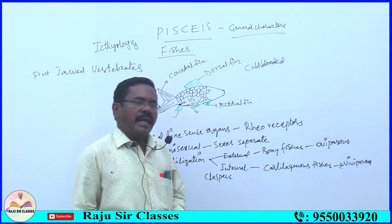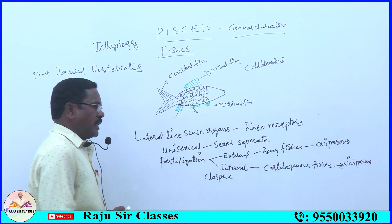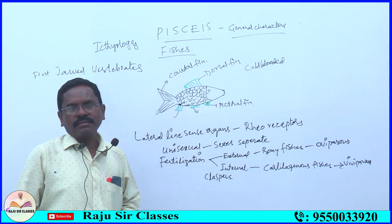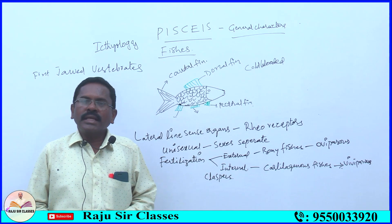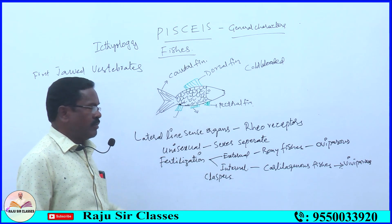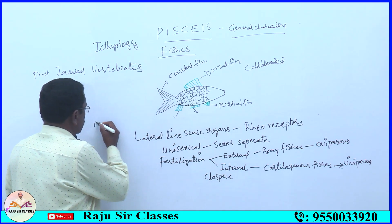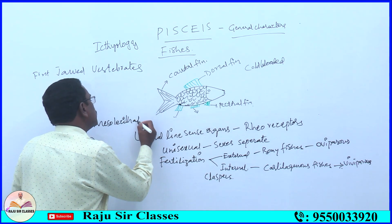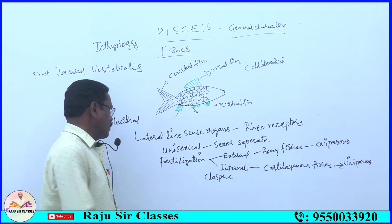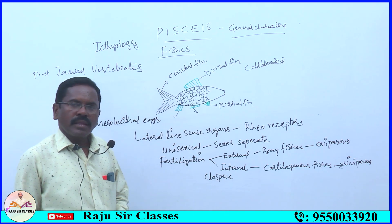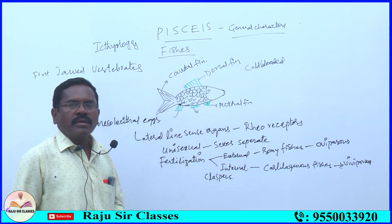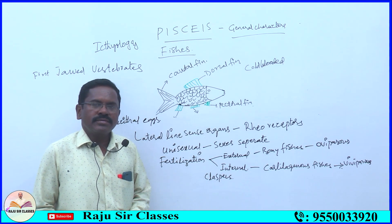The type of eggs in fishes is mesolecithal eggs. Eggs are classified into three types based on the amount of yolk: microlecithal, macrolecithal, and mesolecithal. The eggs of fishes are mesolecithal — meaning moderate yolk, neither less nor more. So fertilization may be internal or external; some are viviparous and the majority are oviparous. These are the general characters of fishes.